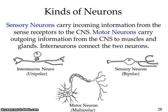When we look at neurons, we look at sensory and motor neurons. Sensory neurons carry incoming information from the sense receptors to the CNS. Motor neurons carry outgoing information from the central nervous system to the muscles and glands. Sensory is incoming to the CNS; motor is outgoing to the muscles. It's confusing, but just make sure you know it.